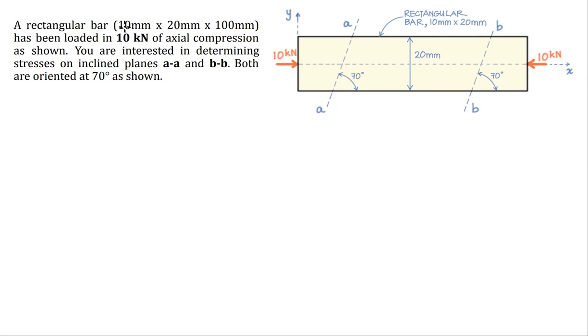We are loading it in 10 kilonewtons of axial compression. Arrows pointed toward the body is compression, and we are in static equilibrium.